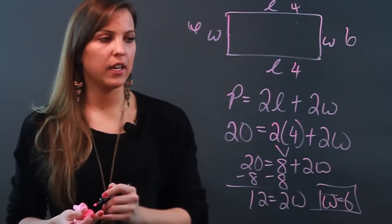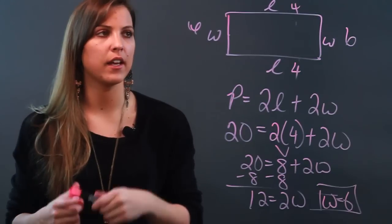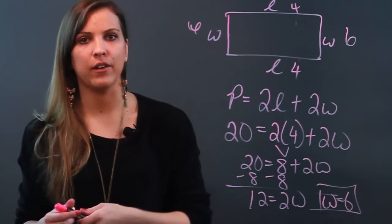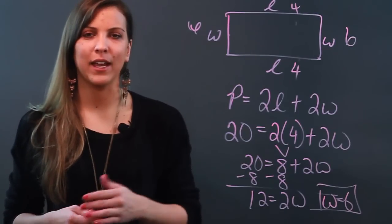So given a side, one of the sides, and the perimeter, you are able to find the other side. And if it's a square then you can go ahead and find either side. So that's how you find the length or width given the perimeter and one of the other sides.